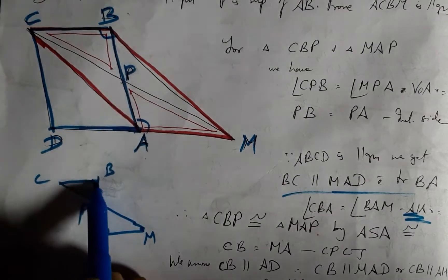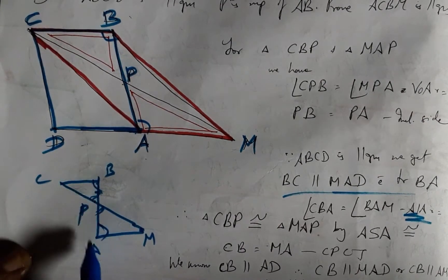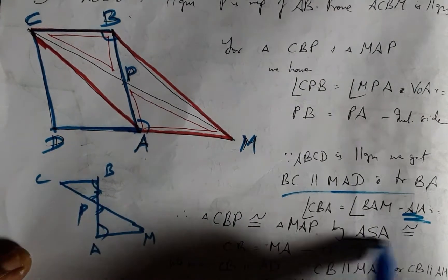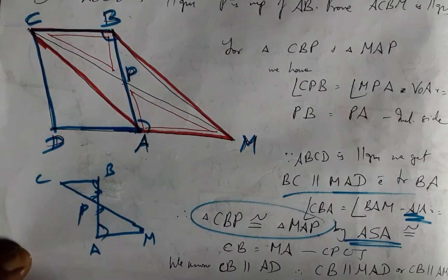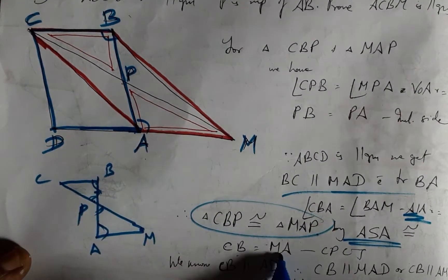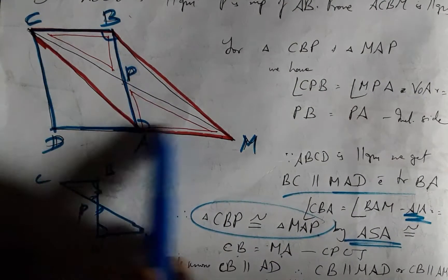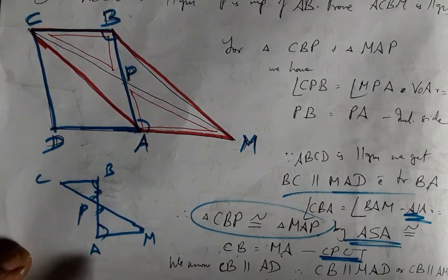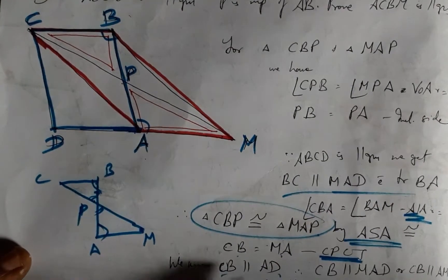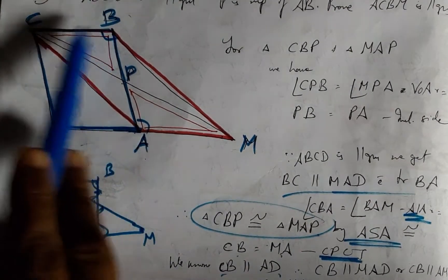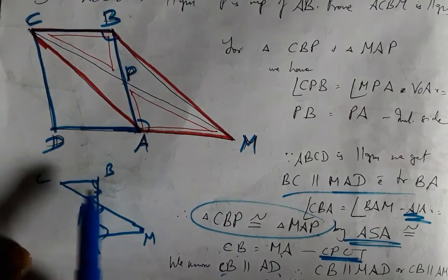And by angle included side and angle congruency, ASA congruency, we have these two triangles congruent. And CB equals MA by CPCT and we know that CB parallel AD as they are part of BC and AD.